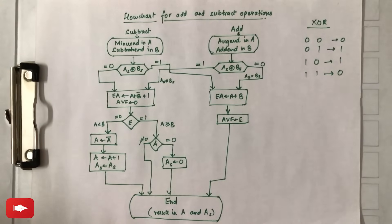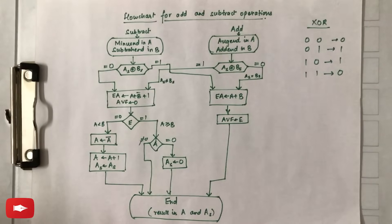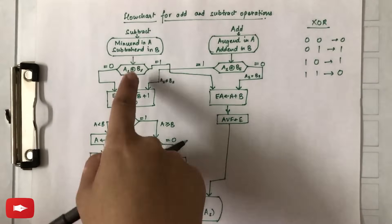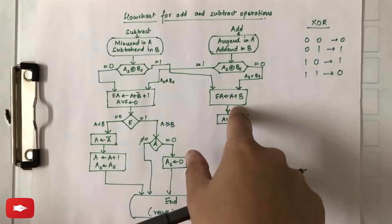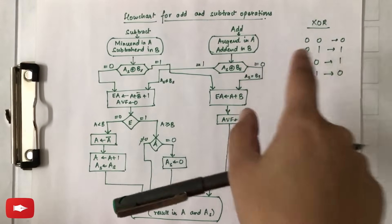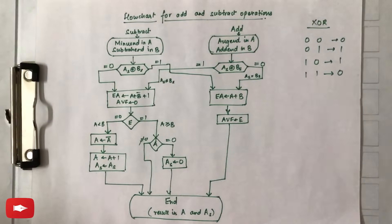The topic for this video is addition and subtraction, but in this video we are going to deal with the flowchart for these two operations. This flowchart is basically divided into two parts: subtraction and addition. We need two numbers, A and B, to perform both operations.